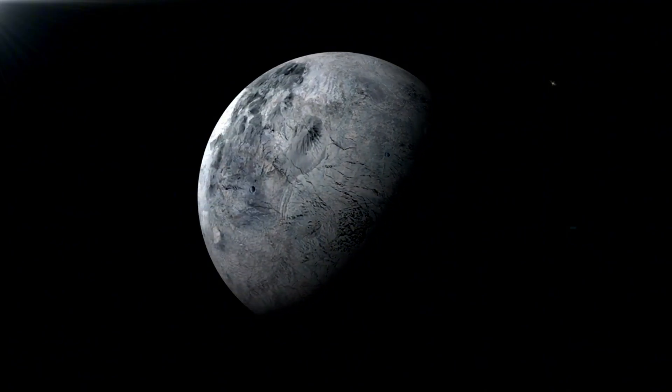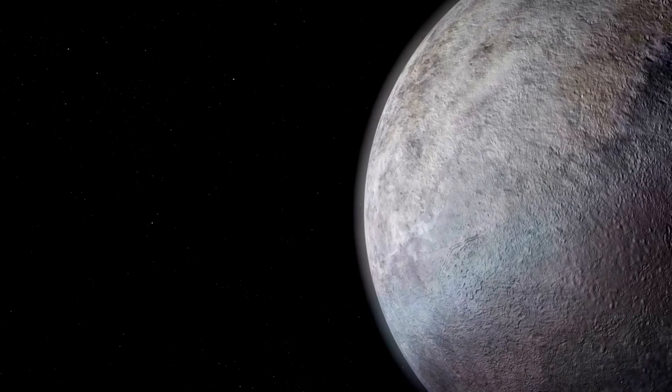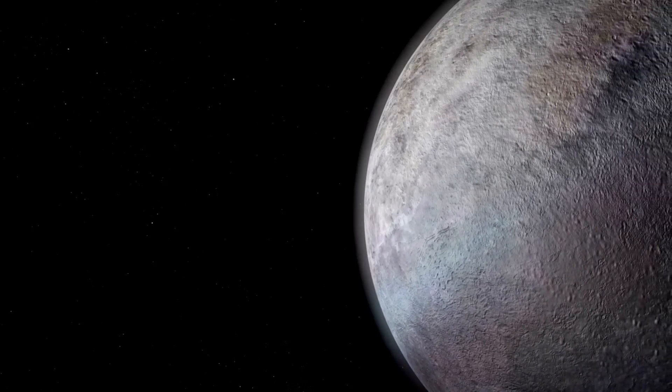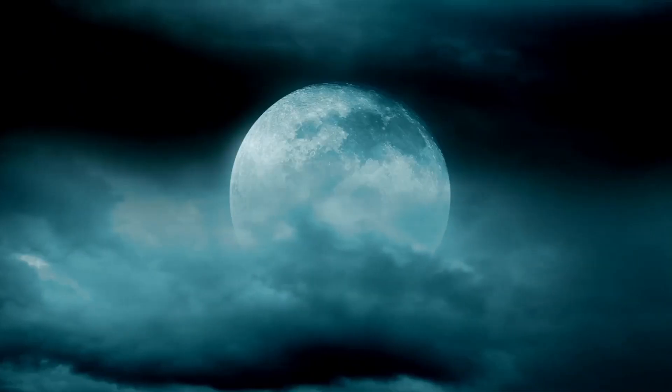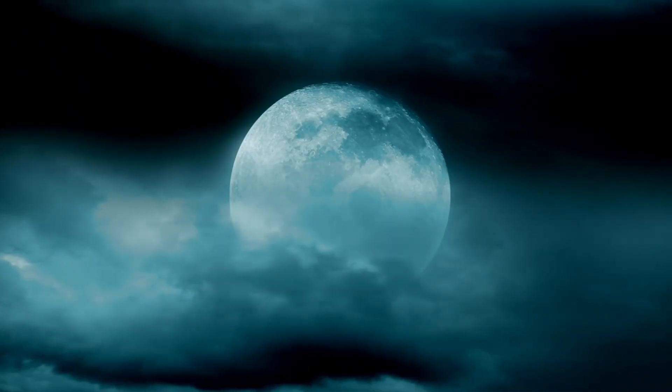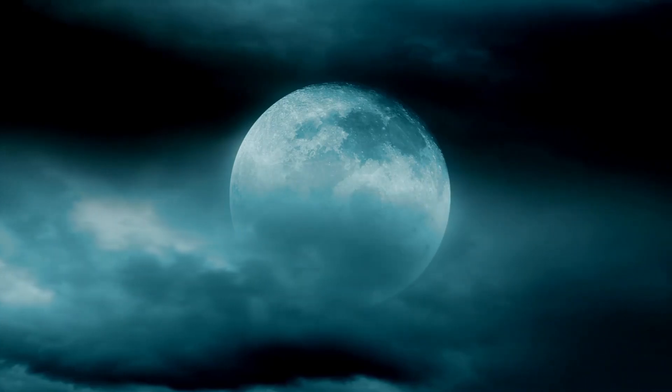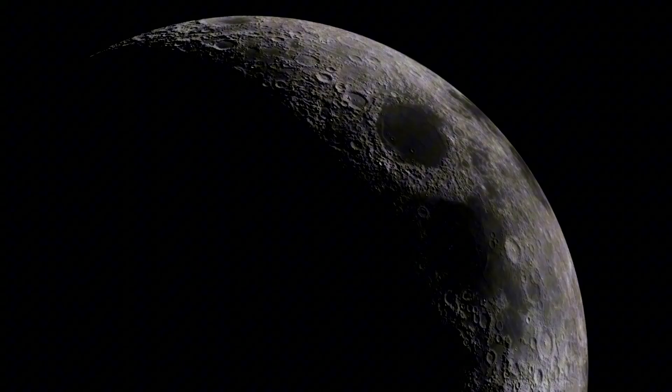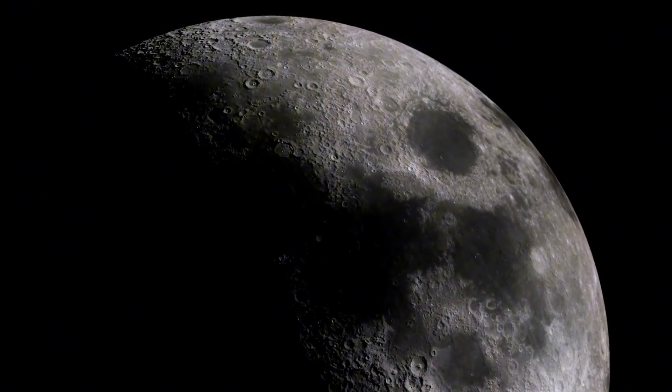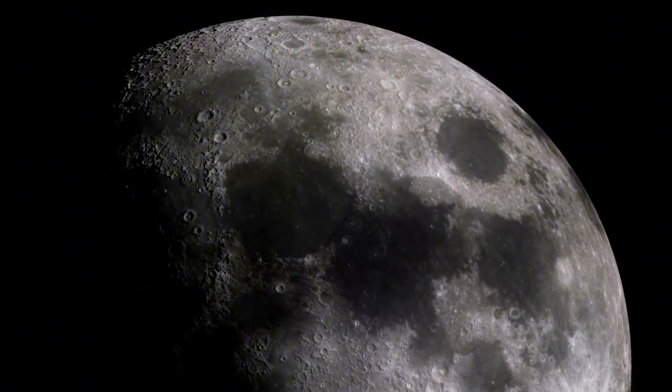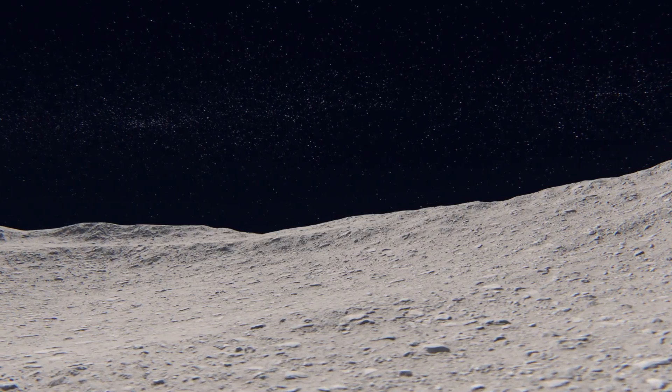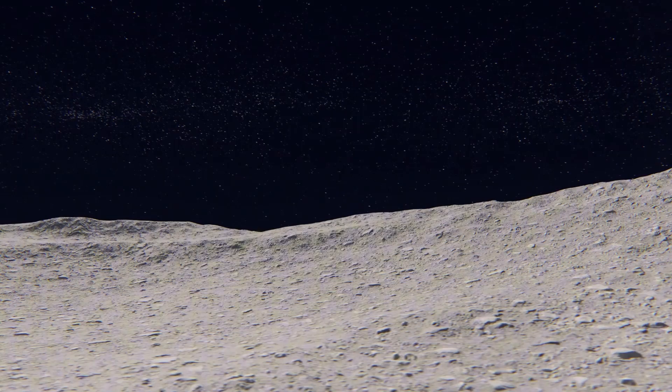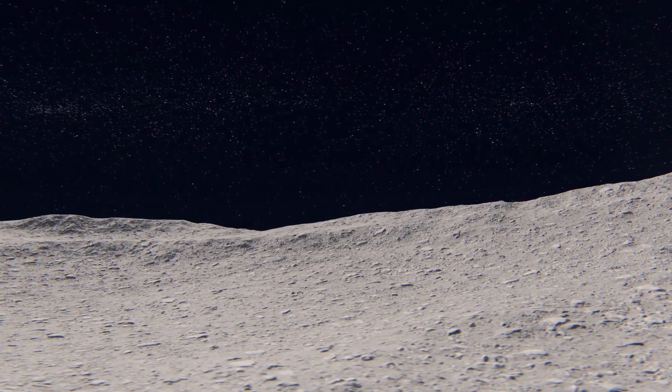The diversity of these conditions highlights the myriad ways life could potentially arise. The search for exoplanets has also broadened our understanding of where life might exist. Kepler's mission alone has discovered thousands of exoplanets, many of which reside in their stars' habitable zones. These findings have expanded the definition of what constitutes a potentially habitable world, allowing scientists to consider additional factors like the presence of moons, atmospheric composition, and planetary motion.